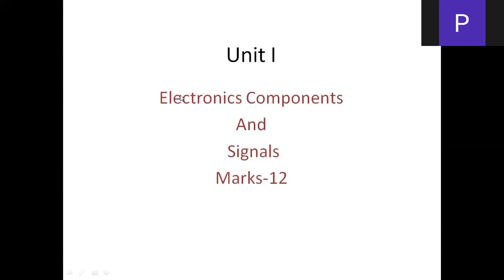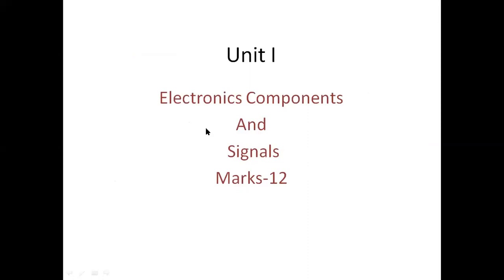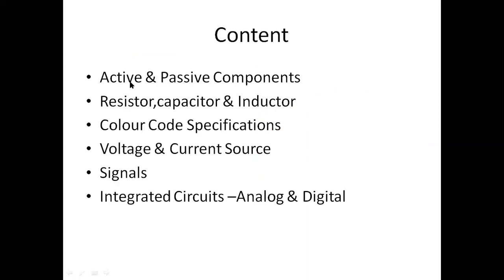We will start from the first unit in our syllabus: electronic components. We will study active and passive components — resistor, capacitor, and inductor — which are basic components in any electrical or electronic circuit. Then we will study color code specifications — that is, the resistor color code table, capacitor color code table, and inductor color code table — from which we will calculate values of capacitor and inductor.